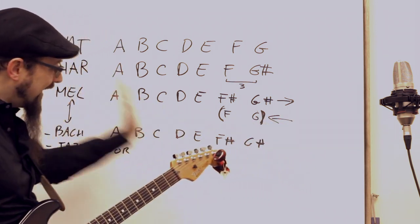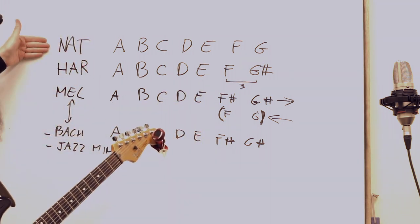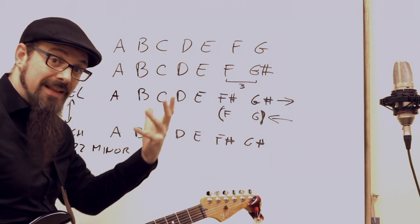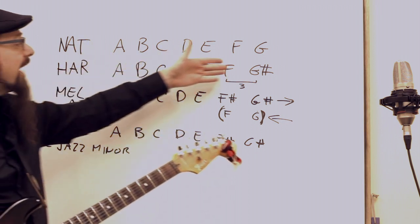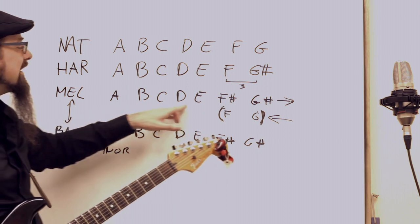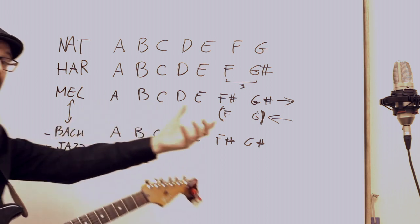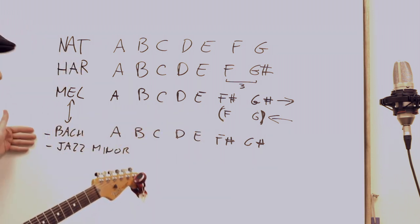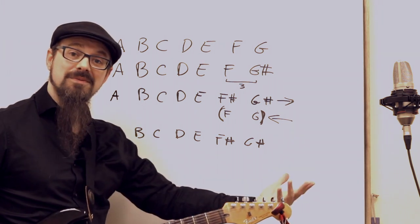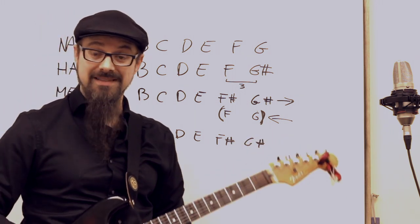I think this is the best way of naming all those scales - it's genius, because we can finally distinguish whether you change the notes or not. Natural: A, B, C, D, E, F, G. Harmonic, invented to create chords: A, B, C, D, E, F, G sharp. Melodic, invented to create melodies: A, B, C, D, E, F sharp, G sharp going up, and A, G, F, E, D, C, B, A coming down. Bach scale or jazz minor: A, B, C, D, E, F sharp, G sharp both going up and going down. Finally, we have clear naming for all these messy situations.